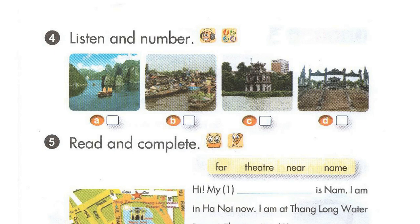Two. Where is Can Tho, Nam? It's in South Vietnam. Three. Look. This is Hue. Where is it, Mai? It's in Central Vietnam. It's far from here.